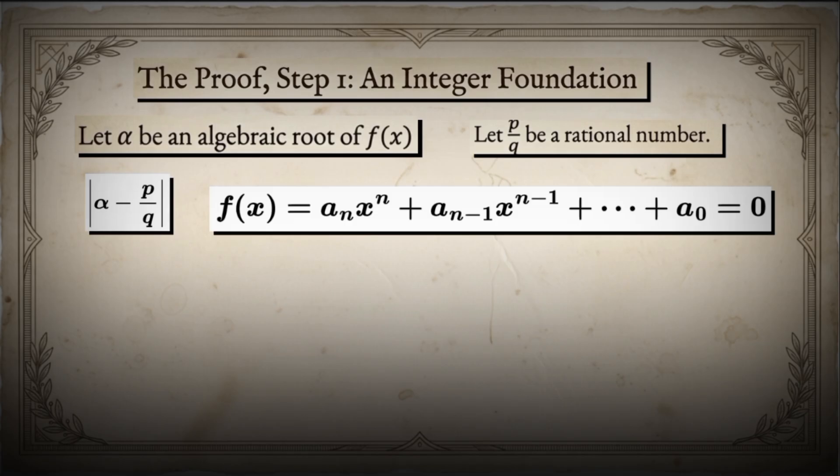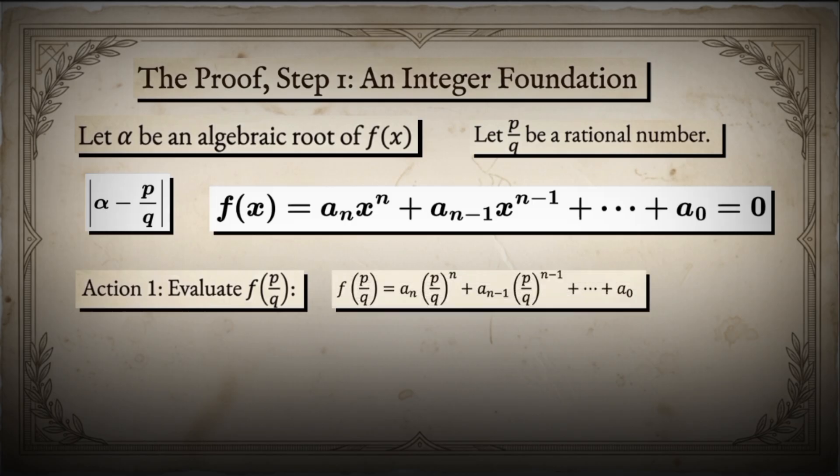Here, f of alpha equals 0, and all the coefficients a sub i are integers, with a sub n not equal to 0. Since f of x has integer coefficients, when we evaluate f at p over q, we get a sub n times the quantity p over q to the power n plus the next terms, all the way down to a sub 0.